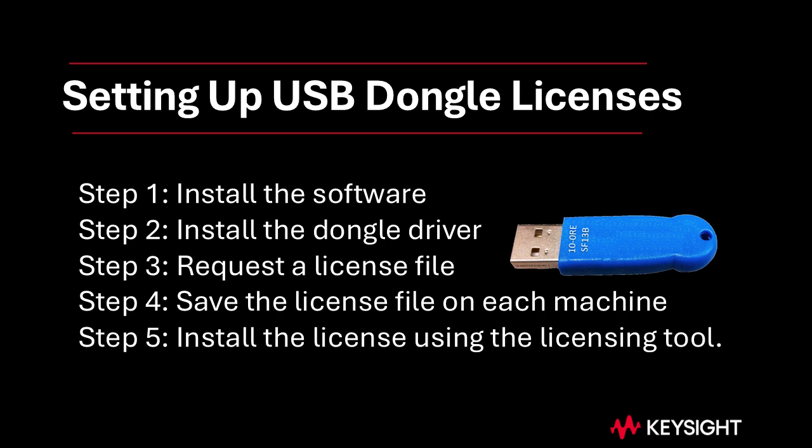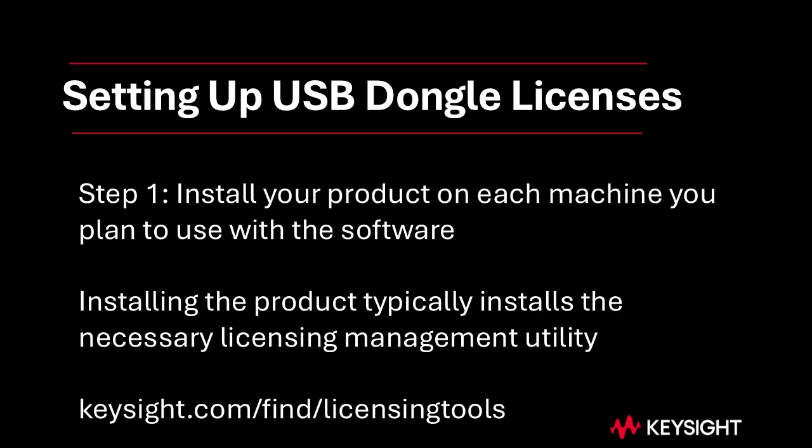Let's go through the steps needed to set everything up. Step 1: Install the Keysight product software and Keysight license management tool. Install the application software on each machine on which you plan to use the Keysight product. The Keysight product software you install usually installs the necessary licensing management utility or tool. If not, see Keysight.com/find/licensing-tools to download and install the appropriate Keysight licensing utility.